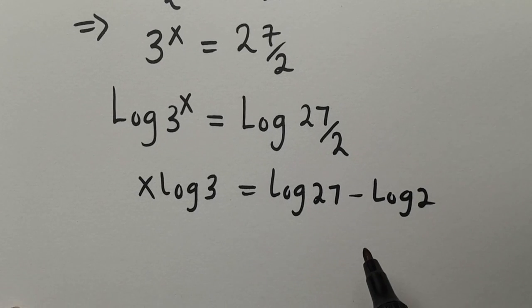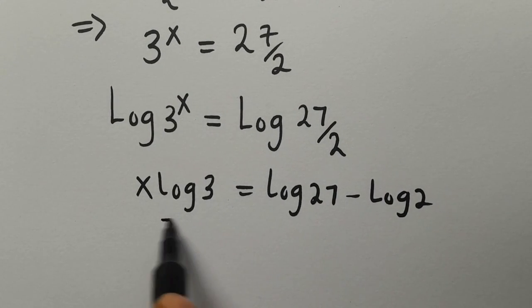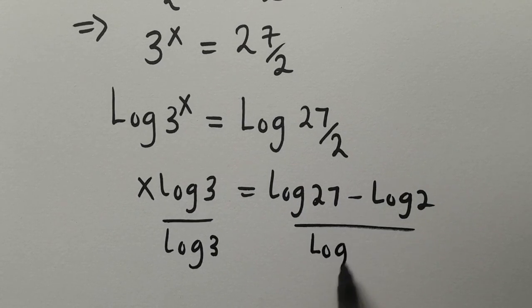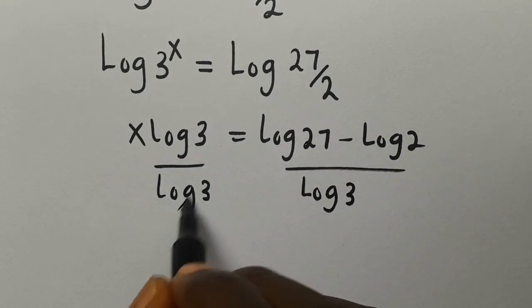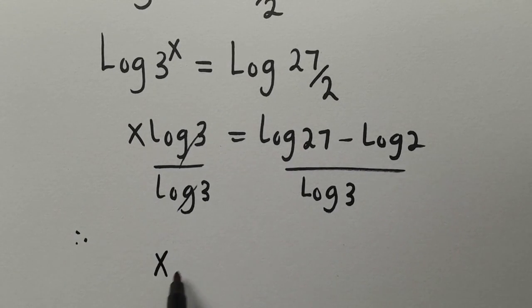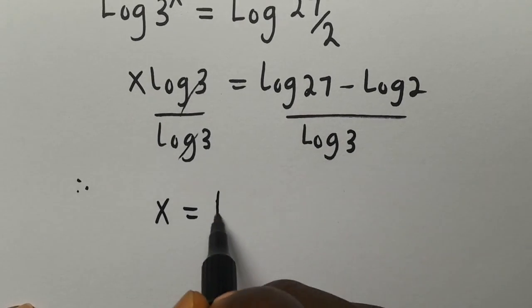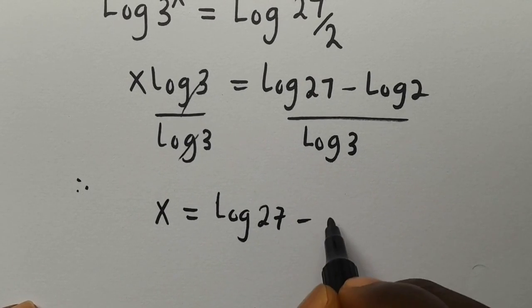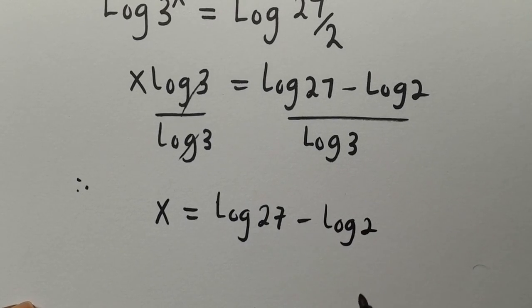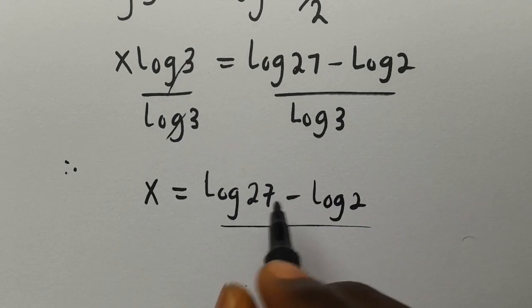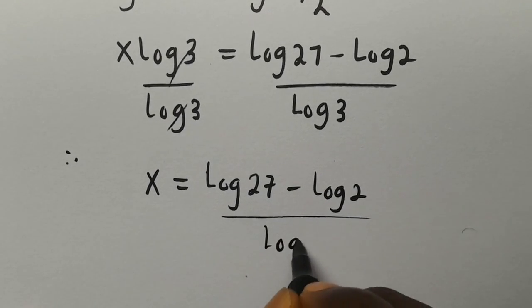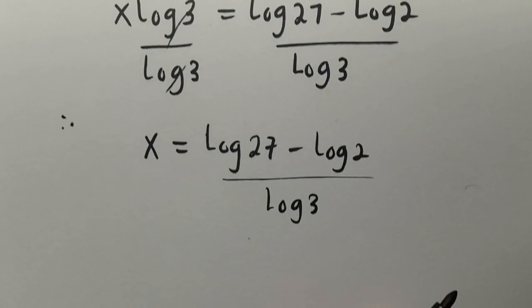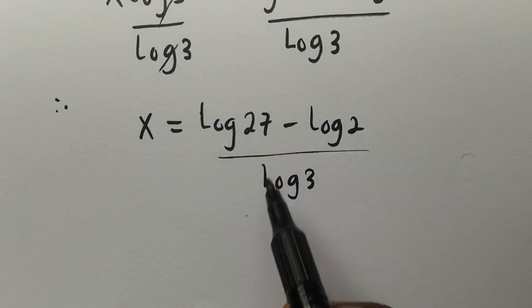Then we divide through by log 3 on both sides. This cancels, so we have x equals log 27 minus log 2, all divided by log 3.